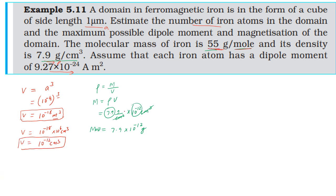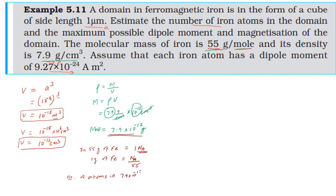Since 55 grams of iron contains one mole, that is Avogadro's number of particles, one gram of iron contains Avogadro's number divided by 55 particles. Therefore, 7.9 × 10⁻¹² grams contains 7.9 × 10⁻¹² multiplied by Avogadro's number 6.02 × 10²³, divided by 55, giving the number of iron atoms in the domain.